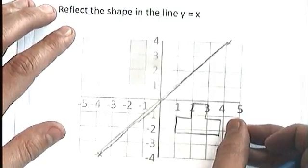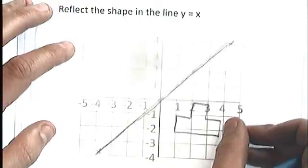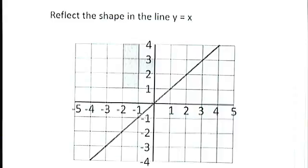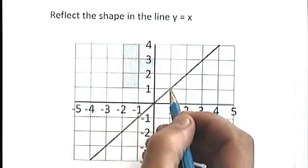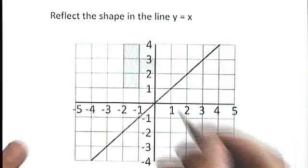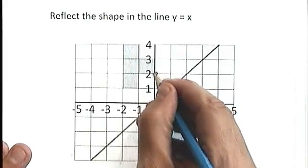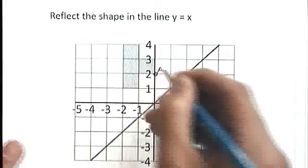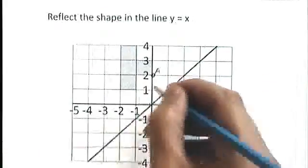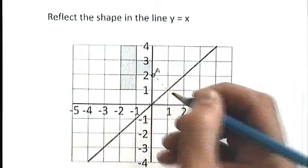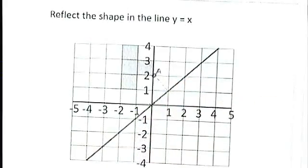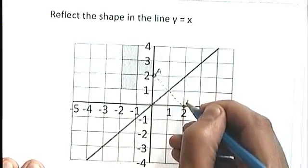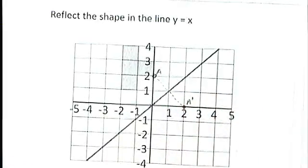Unfortunately, like I've done it there, I've done it a little bit out and it's not quite as accurate as I'd like it to be. There is a slightly more accurate way to do it, which is to count the squares between your shape and the mirror line. If you've got this point here, which I'm going to label A, and you count diagonally the squares, so this is one square diagonally. Go the same distance the other side, so carry on straight on through one square, and that is where that point needs to end up.